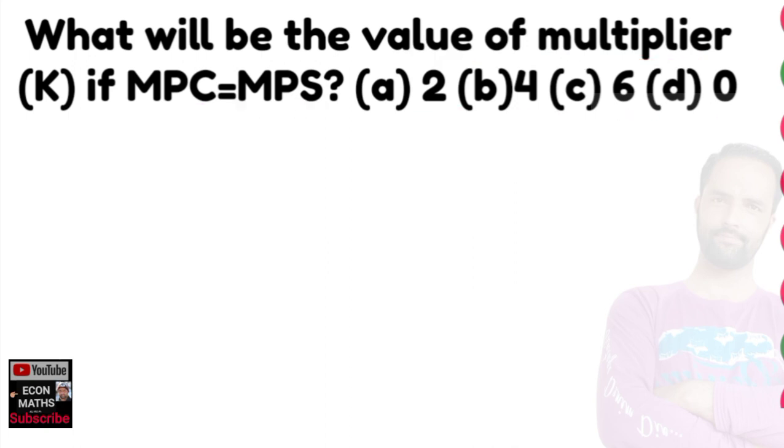The formula for multiplier, which is denoted by K, is equal to the change in output with respect to change in income, which is equal to 1 upon 1 minus marginal propensity to consume.